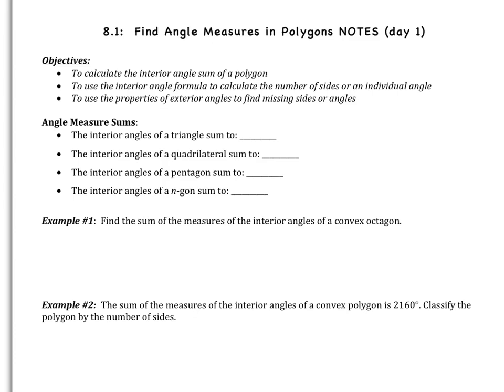Welcome geometers to our first video of chapter 8, which is find angle measures in polygons. Chapter 8 is all about quadrilaterals. We're going to start out with just the basics of polygons today, and then we're going to move on to parallelograms and then more specific types of quadrilaterals.